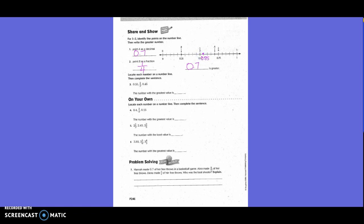2 fifths, where would 2 fifths be? Let's look at it this way. If we converted that to a decimal, we'd have to take 5 times what? 20. So whatever we do on the bottom, we have to do on the top. So 2 times 20 would be what? 40.